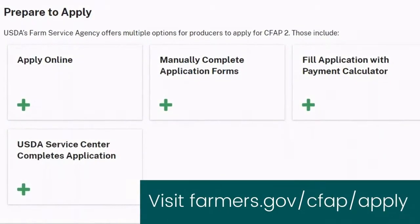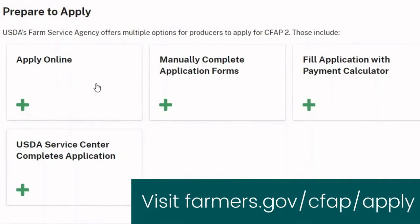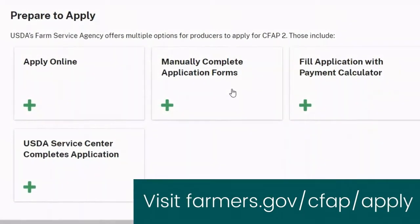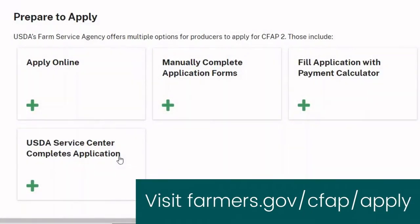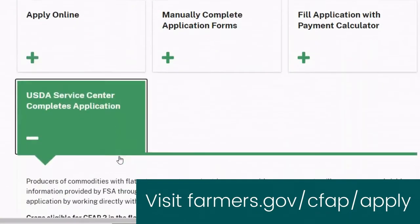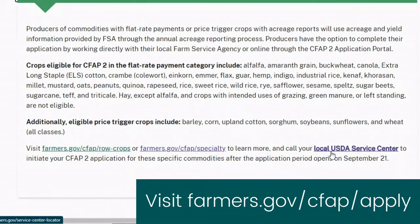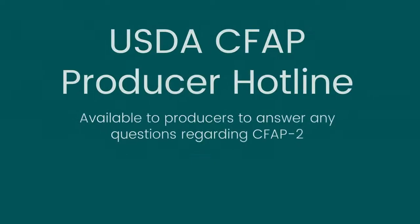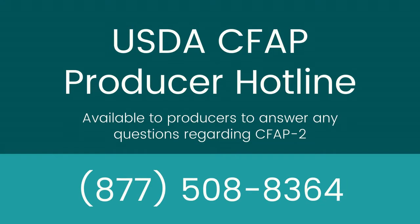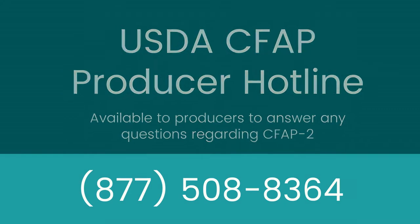Visit farmers.gov/cfap/apply to either complete the application online, download a paper version of the application, or to find the contact information for your local FSA County office to set up an in-person or phone appointment. Farmers who are new to FSA or CFAP can also call the USDA producer hotline at 877-508-8364 or contact their local FSA office with any questions about how to complete the application.